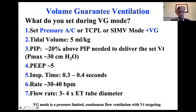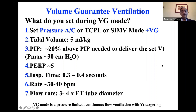Rate is 30 to 40. In small micro-preemies you may set 40; in bigger babies, 30. Flow rate is generally three or four times the size of the endotracheal tube — so if you have a 3.0 endotracheal tube, set the flow rate at about 10 liters per minute. VG mode is a pressure-limited, continuous-flow ventilation that targets the tidal volume.